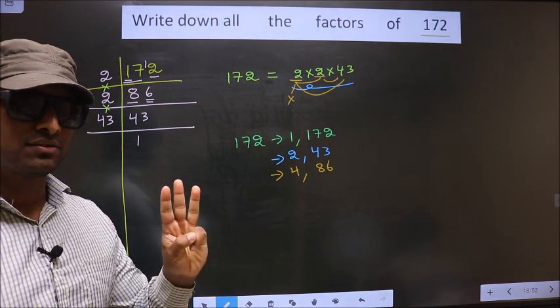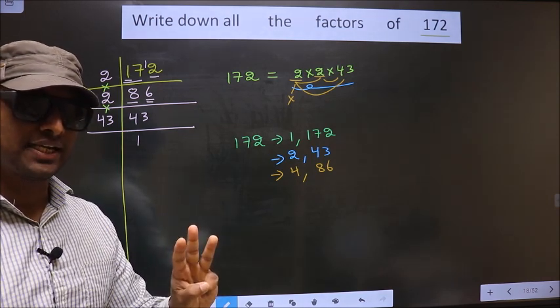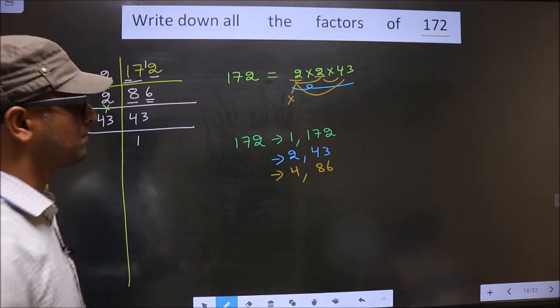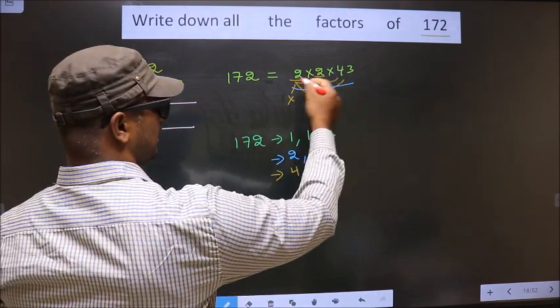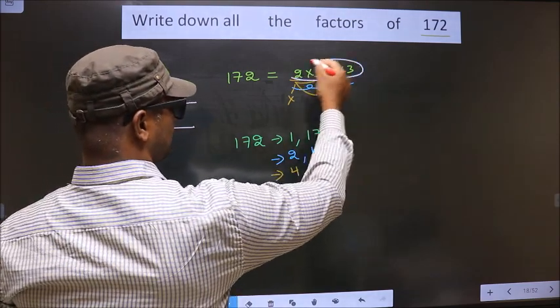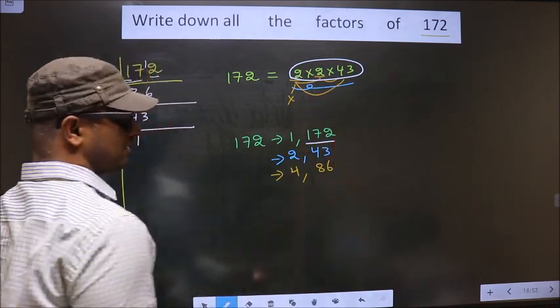Next. Now, you take a combination of three numbers. How do we take it? See. Here, we have three numbers. If we take all the three numbers, we get 172 itself.